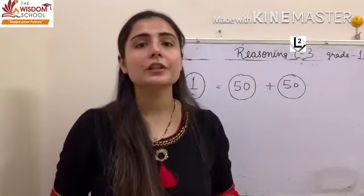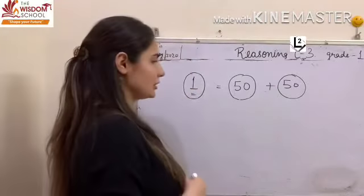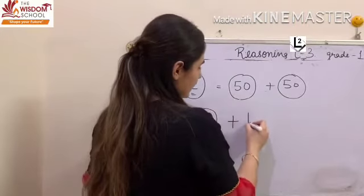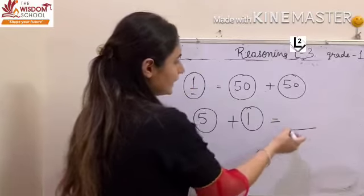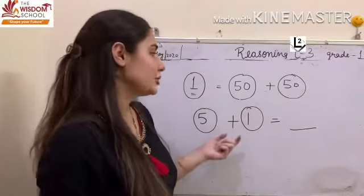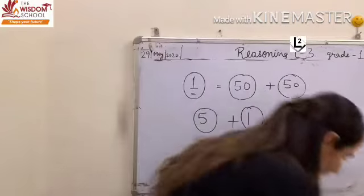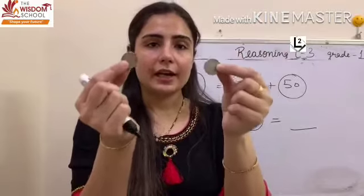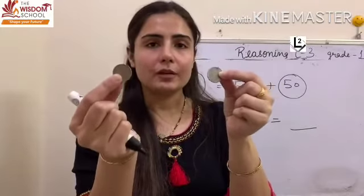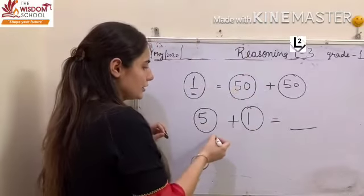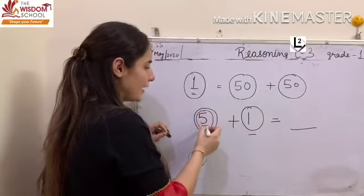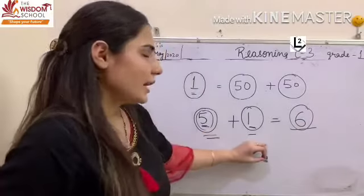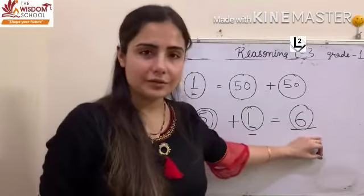Now children, we will learn a few concepts based on this. If I ask you that if we add a 5 rupee coin and a 1 rupee coin, then what is the total amount we will get? You will be asked to calculate the total money when you have one 5 rupee coin and one 1 rupee coin. What you have to do is add the currency: 5 rupees plus 1 rupee is equal to 6 rupees. So if we are asked how much is the total amount, it is equal to 6 rupees.